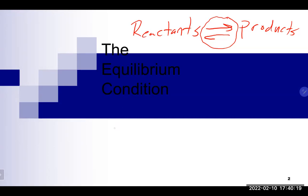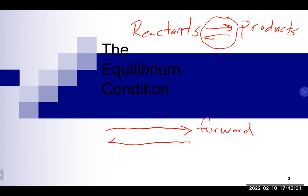There is the forward direction, which heads from reactants to products, and then there is the reverse direction, which heads from products back to reactants. In a reversible reaction, we typically start out with our reactants. At the beginning, it's pretty much all the forward reaction — reactants coming together to form products. At some point, enough products build up that they start recombining and heading in the opposite direction.